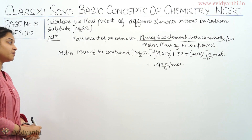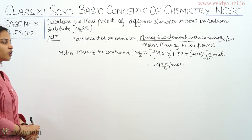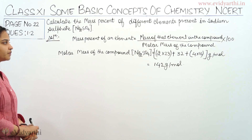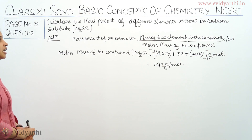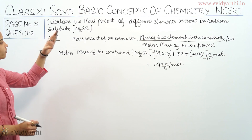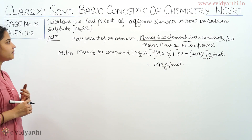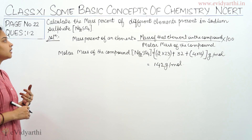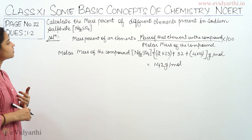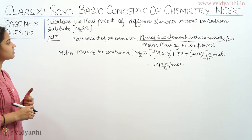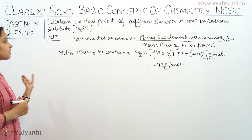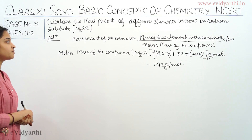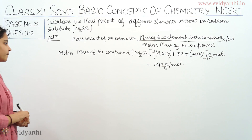So the molar mass of the compound is 142 grams per mole. Now we will be calculating the mass percent of three different elements present in the compound. The first element is sodium, second is sulfur, and third is oxygen. Let's begin with the mass percent calculation of sodium.